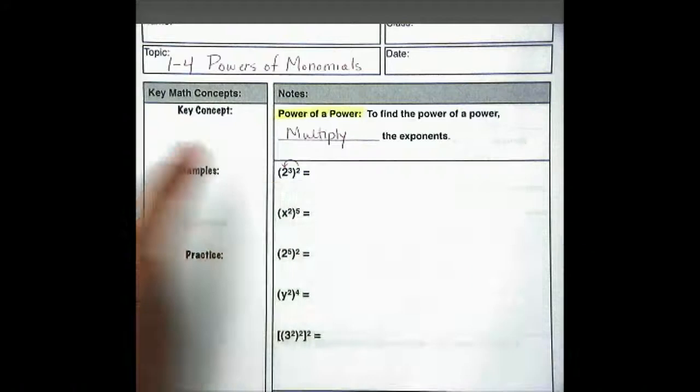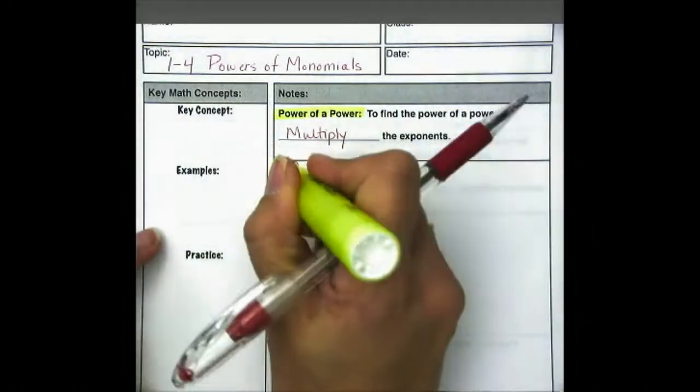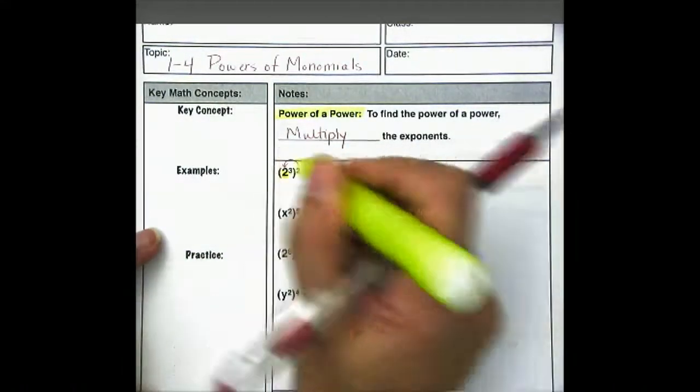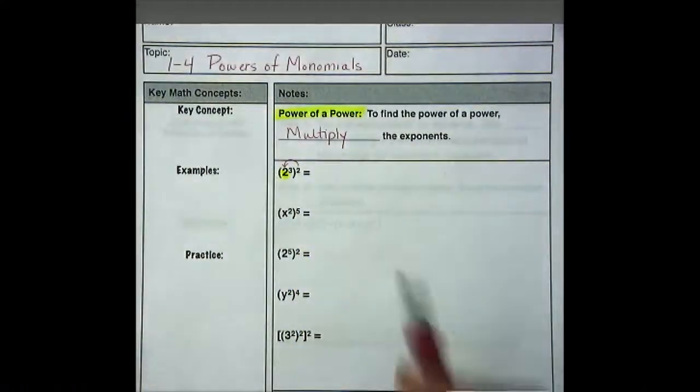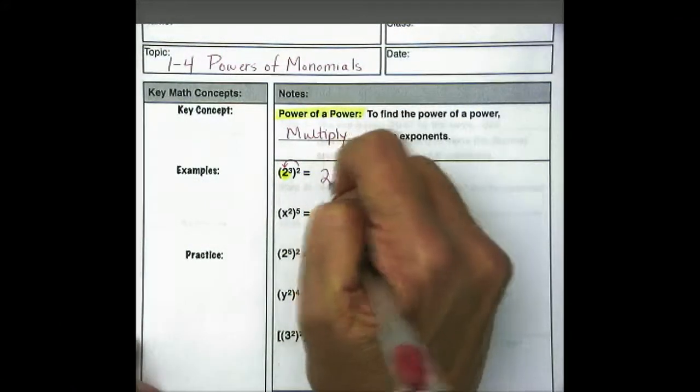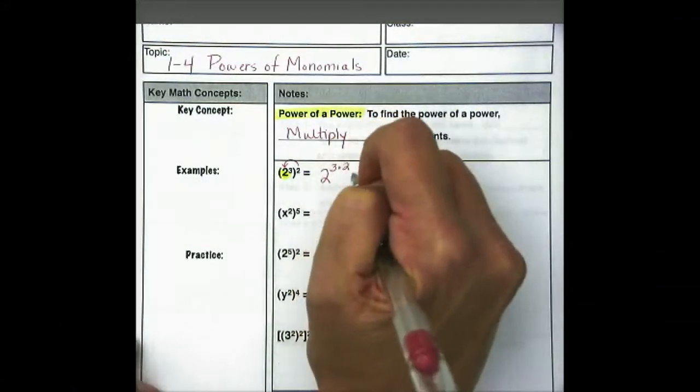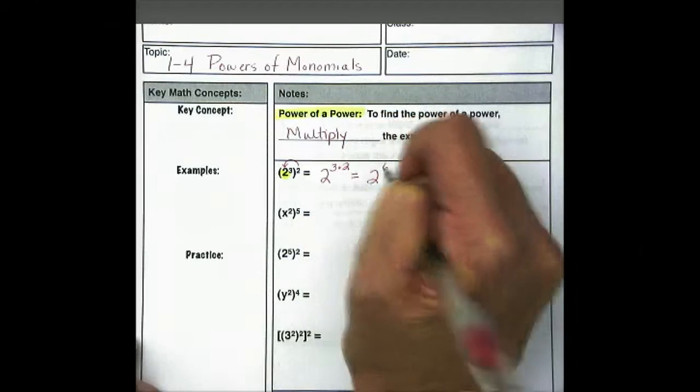So here 2 is our base. Let's highlight our base. And remember that our base always stays the same. So we have 2 to the 3 times 2, or 2 to the 6th power.